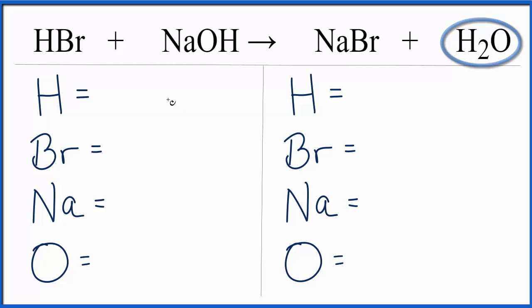To balance it, let's count the atoms up on each side. So on the reactant side, we have one hydrogen, and we have this hydrogen right here. So we actually have a total of two hydrogen atoms. We have the one bromine right here,